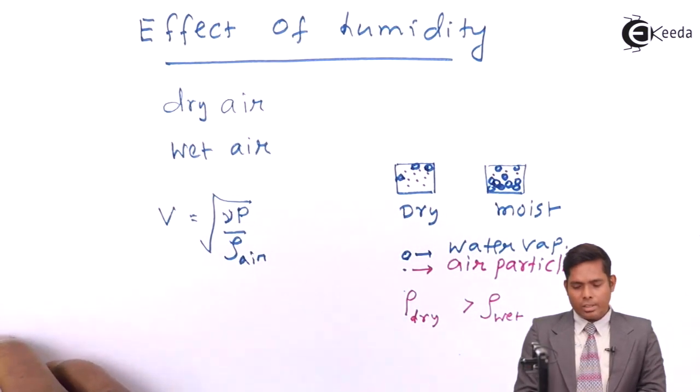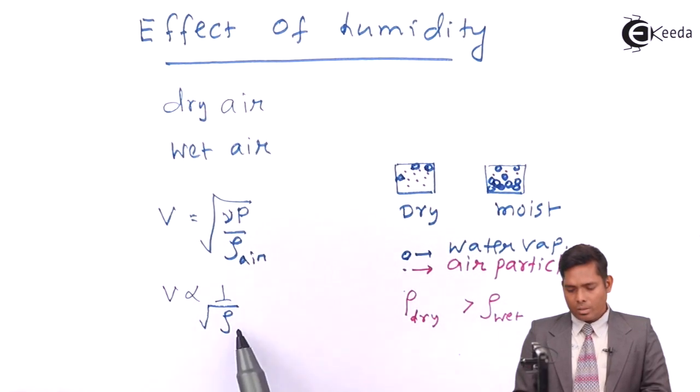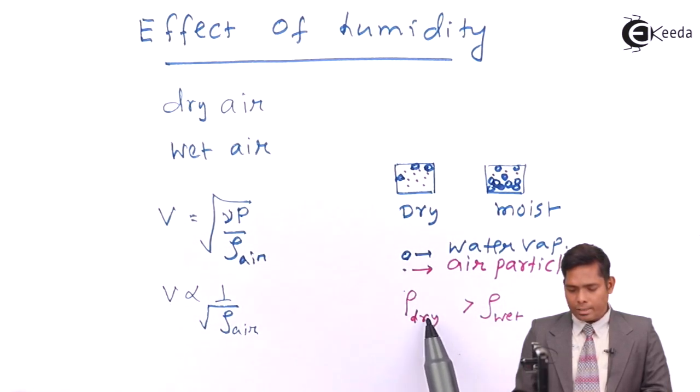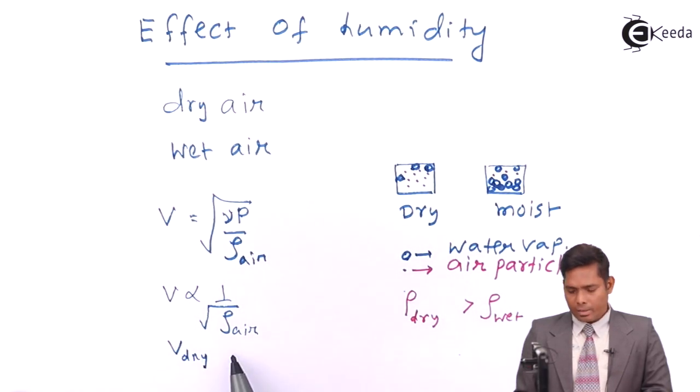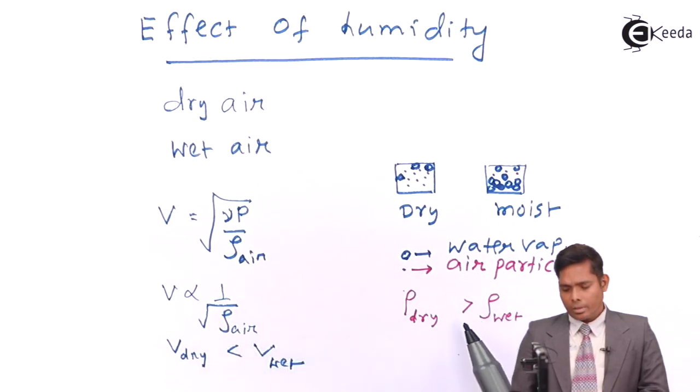Now if you check this relation, V is inversely proportional to density of air, square root obviously. Then if this is greater, speed will be less. In which case is this greater? Dry air. So speed in dry air is less than speed in moist air. In dry air, the sound travels a little slower because it is denser.